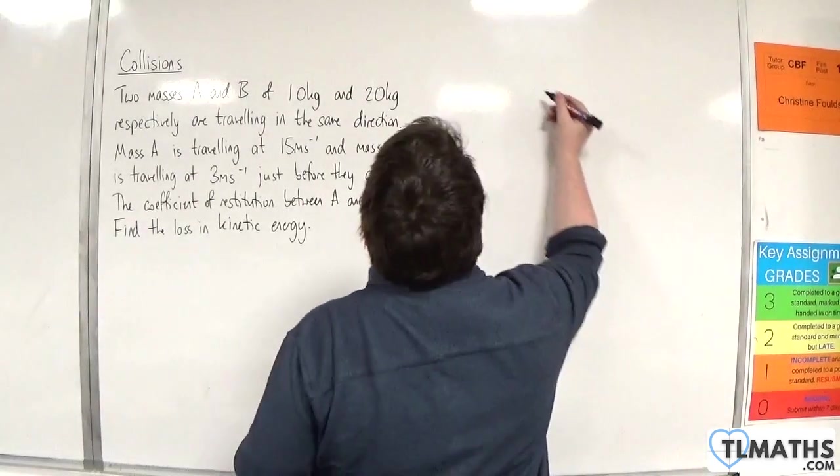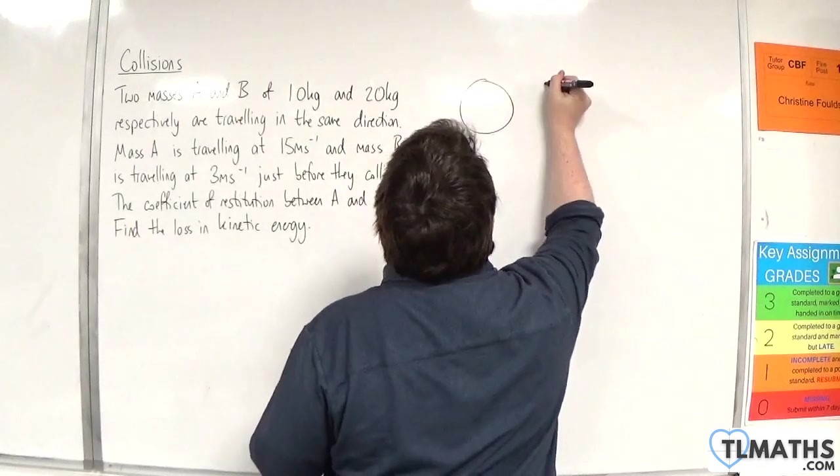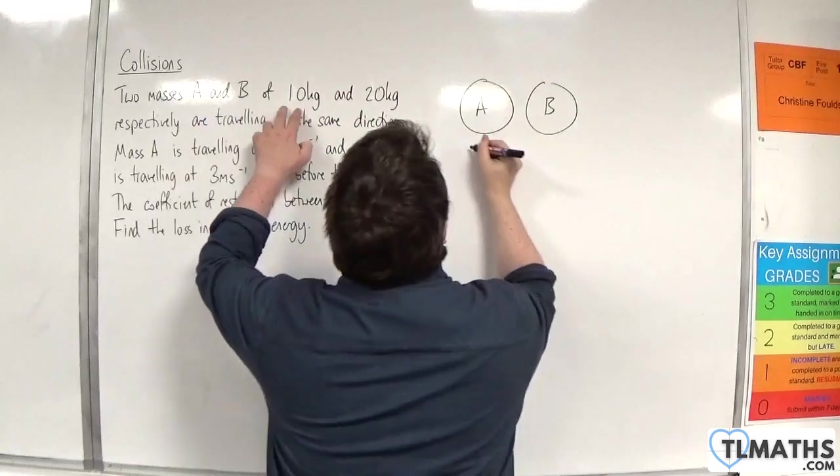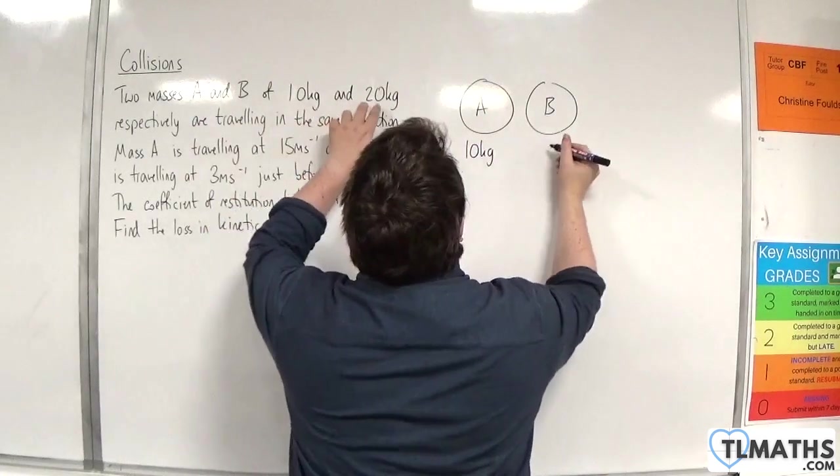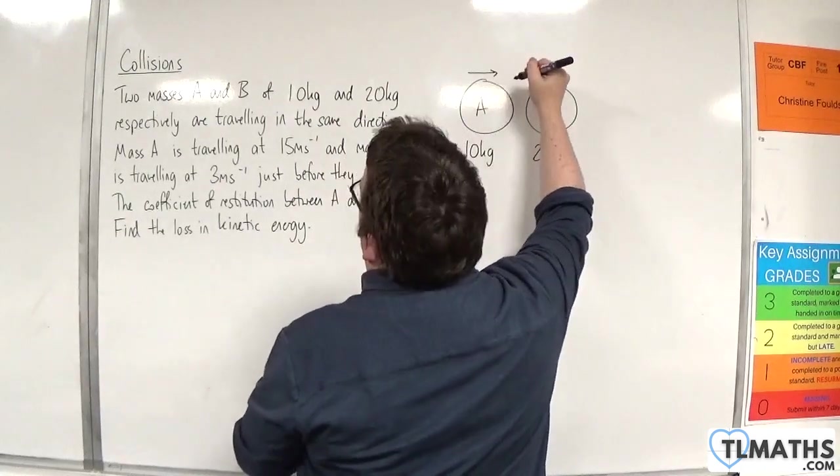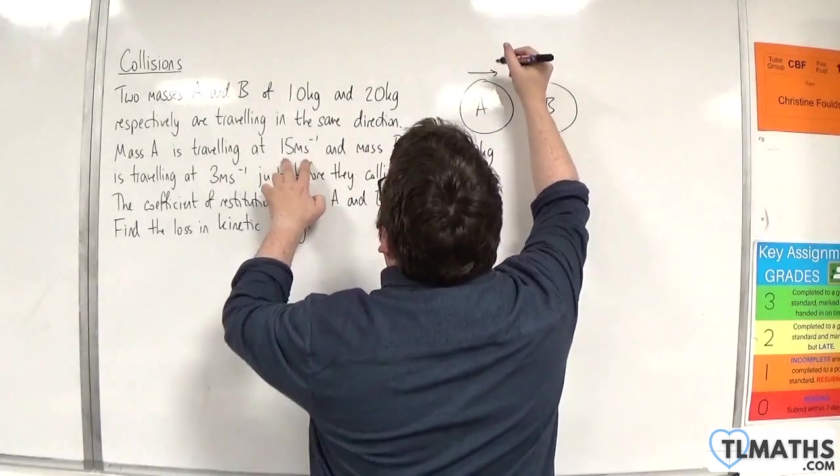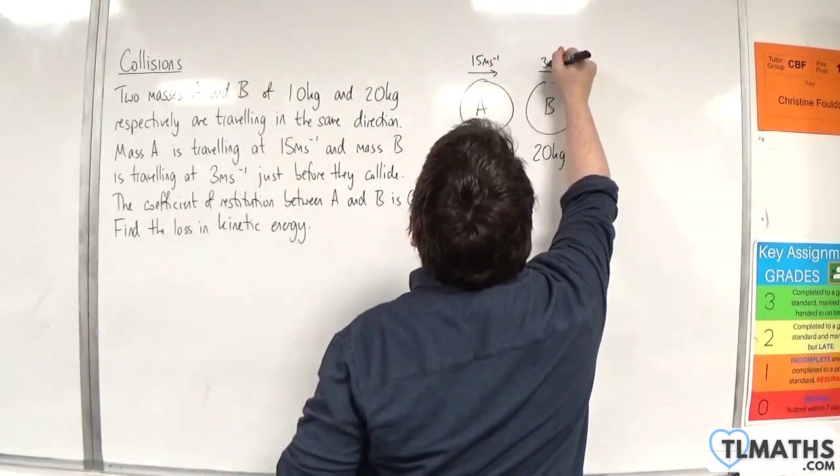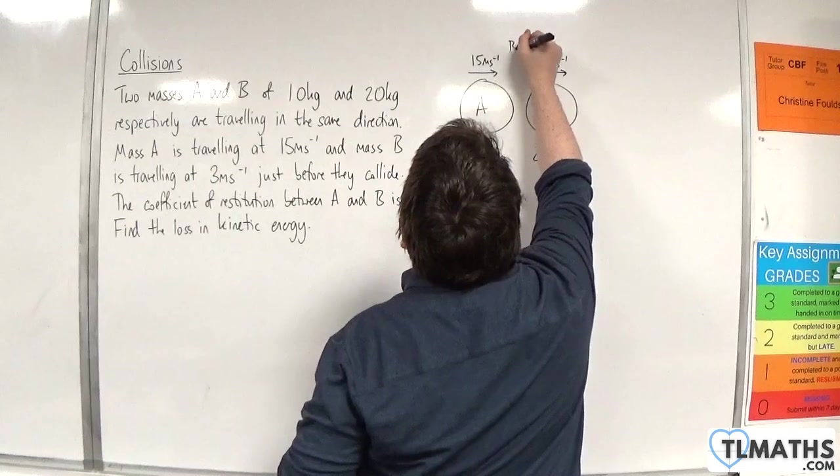Okay, so we'll draw a diagram first. We have particle A and particle B. A has a mass of 10 kilos, B has a mass of 20 kilos. A is traveling towards B at a speed of 15 meters per second, and B is traveling in the same direction but at 3 meters per second. So this is before.